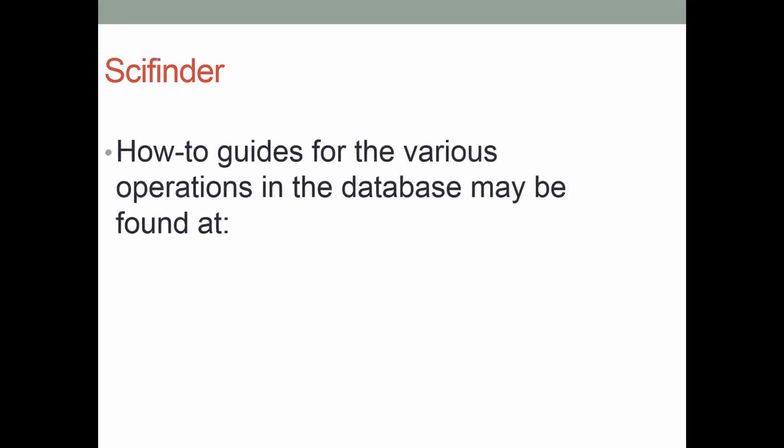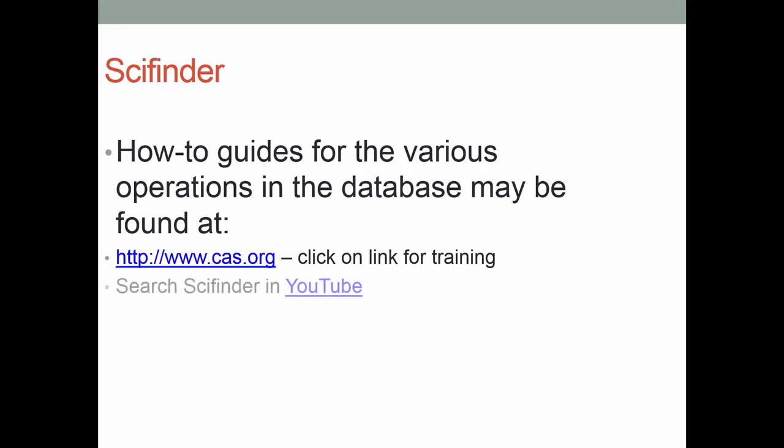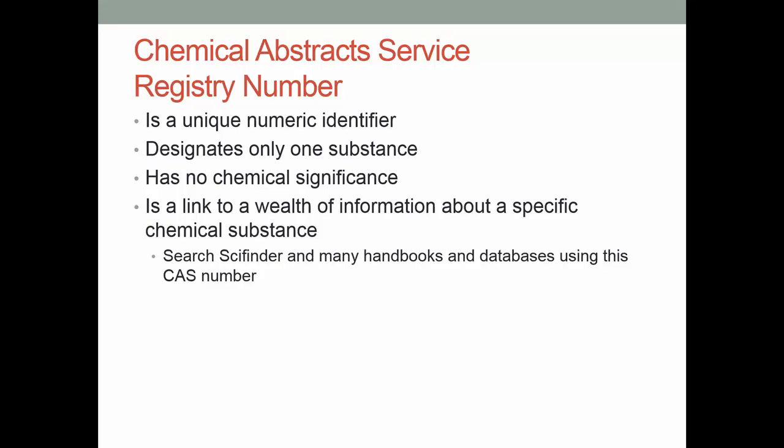SciFinder has how-to guides. If you go to the Chemical Abstract Service homepage, www.cas.org, you can search for a link to training. There are also YouTube videos — some done by Chemical Abstract Service, some by people at other universities — to help you learn how to search SciFinder. An important feature is the Chemical Abstract Service registry number: every unique chemical substance is given a registry number. It's actually easier to search on a specific chemical substance using the registry number rather than the name, since names can be ambiguous. You'll see many handbooks and other databases use this CAS number. With SciFinder, you need to set up an account once, and it's the only database here at NJIT where you need an account.